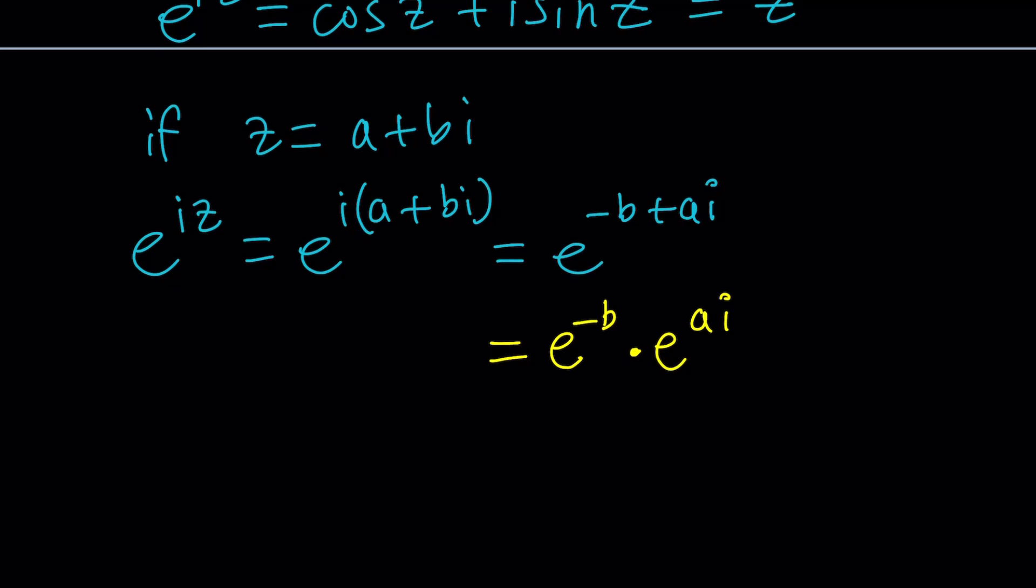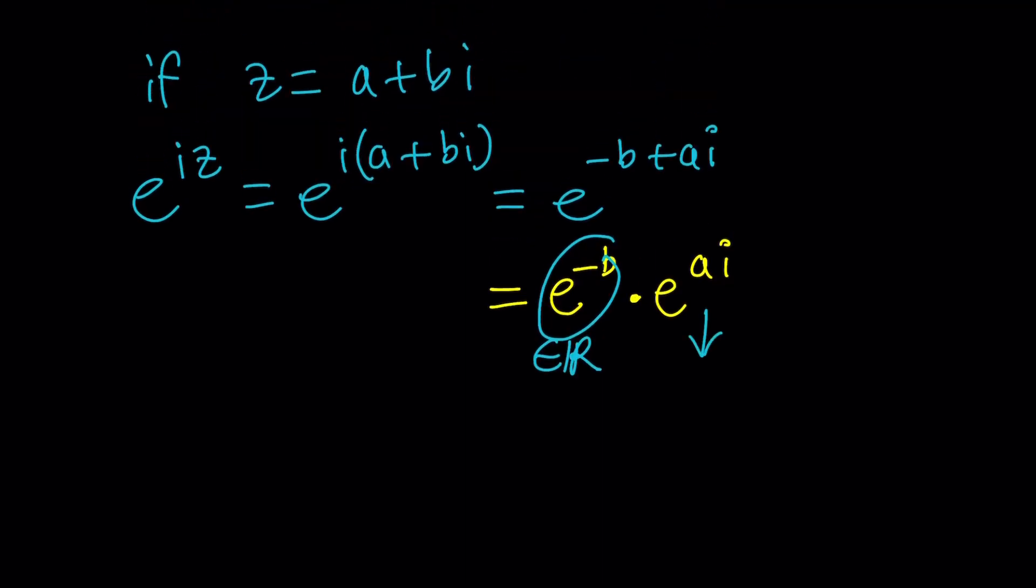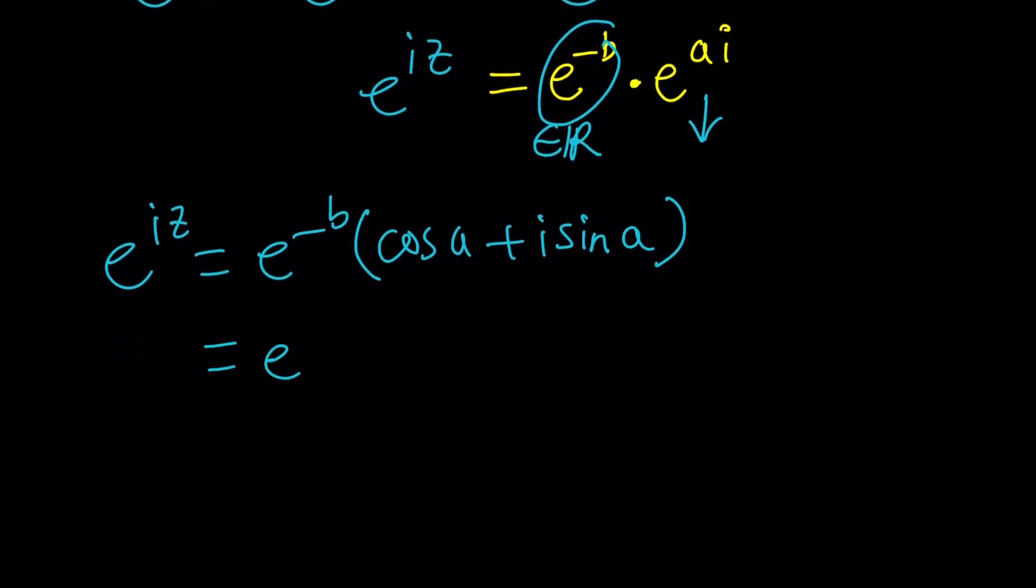This can be written as e to the power negative b times e to the power ai. Remember, a is a real number and b is a real number. So e to the power negative b is actually real. Awesome. And of course, e to the ai is complex, right? So how do we work this out? Again, by using Euler's formula, this can be written as cosine of a plus i sine of a. So this becomes e to the iz becomes e to the power negative b multiplied by cosine of a plus i times sine of a. So after distributing, we're going to be able to get our number in standard form e to the power negative b cosine of a plus i times e to the power negative b times sine of a. Great, so this is e to the iz.